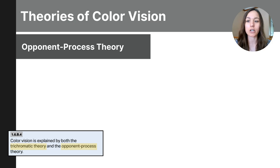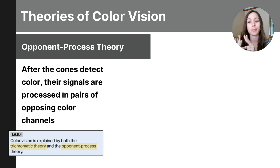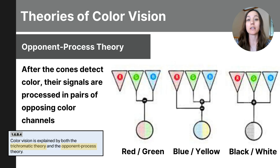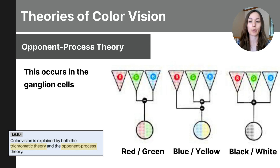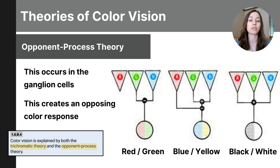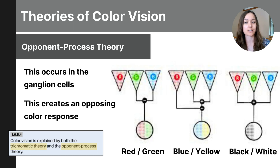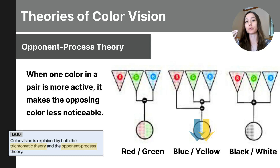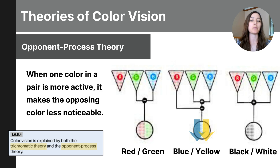To define the opponent process theory: the cones detect the color and then their signals are processed in pairs of opposing color channels — red versus green, blue versus yellow, and black versus white. This occurs in the ganglion cells of the retina and the brain's visual pathways, where signals from the cones are combined in a way that creates opposing color responses. For the red versus green channel, the brain compares signals from red-sensitive cones and green-sensitive cones — when one is active, it makes the other seem less noticeable. For blue-yellow, the brain compares blue-sensitive cones with a mix of green and red-sensitive cones, creating a contrast between blue and yellow. When one is more active, it makes the opposing color seem less noticeable, perceiving it either as blue or yellow.